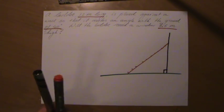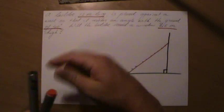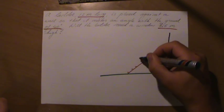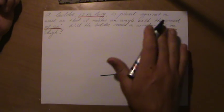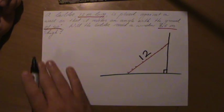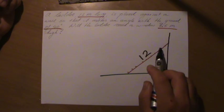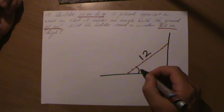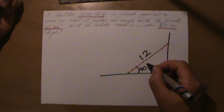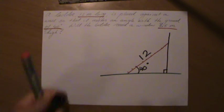But anyway, that is your ladder. And let me put in all that information now they give us in that word problem. They say this is 12 meters, let's put a big 12 there. And it makes an angle of 40 degrees with the ground, so the ladder and the ground make an angle of 40 degrees. Let's put it there.